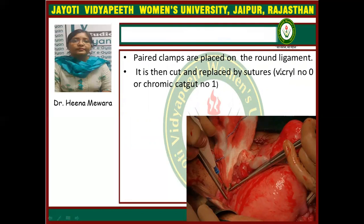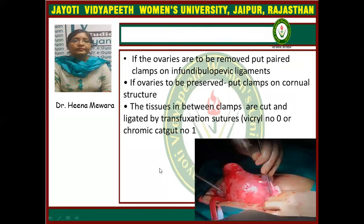Paired clamps are placed on the round ligament. It is then cut and replaced by suture — Vicryl no. 0 or chromic catgut no. 1. This is the clamp which is placed on the round ligament. If the ovaries are to be removed, put paired clamps on the infundibulopelvic ligament. If ovaries are to be preserved, then put the clamp on the cornual structure. The tissue in between is cut and ligated by transfixation suture — Vicryl no. 0 or chromic catgut no. 1.